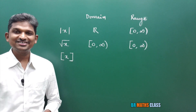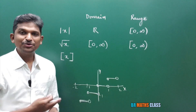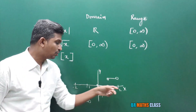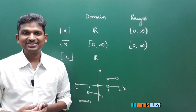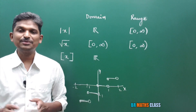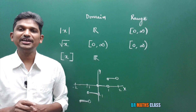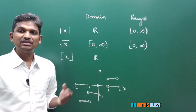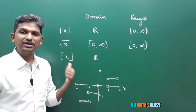Now, the greatest integer function ⌊x⌋. Its graph looks like steps. This function is defined for all real numbers, so its domain is all real numbers. The range of the greatest integer function is all integers, because it always outputs an integer: ⌊0.5⌋ = 0, ⌊1.92⌋ = 1, ⌊−0.5⌋ = −1. You can observe from the graph that it always gives integers. So the range of the greatest integer function is all integers (ℤ).